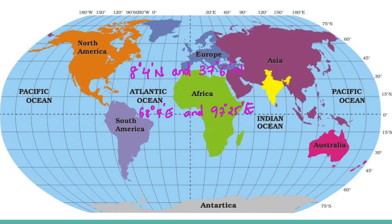To the south-east of the mainland lie the Andaman and Nicobar Islands in the Bay of Bengal, and to the south-west of the mainland lie the Lakshadweep Islands in the Arabian Sea.